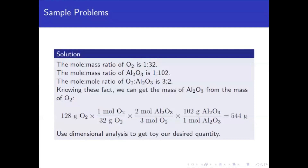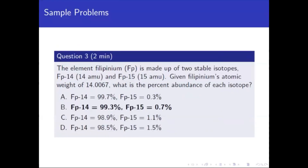Then we use 2 moles of Al2O3 over 3 moles of oxygen — that is the mole-to-mole ratio of 3 to 2. Finally, applying the mole-to-mass ratio of Al2O3 gives 544. This problem tests how well you can handle ratio and proportion and use dimensional analysis to reach your desired quantity.